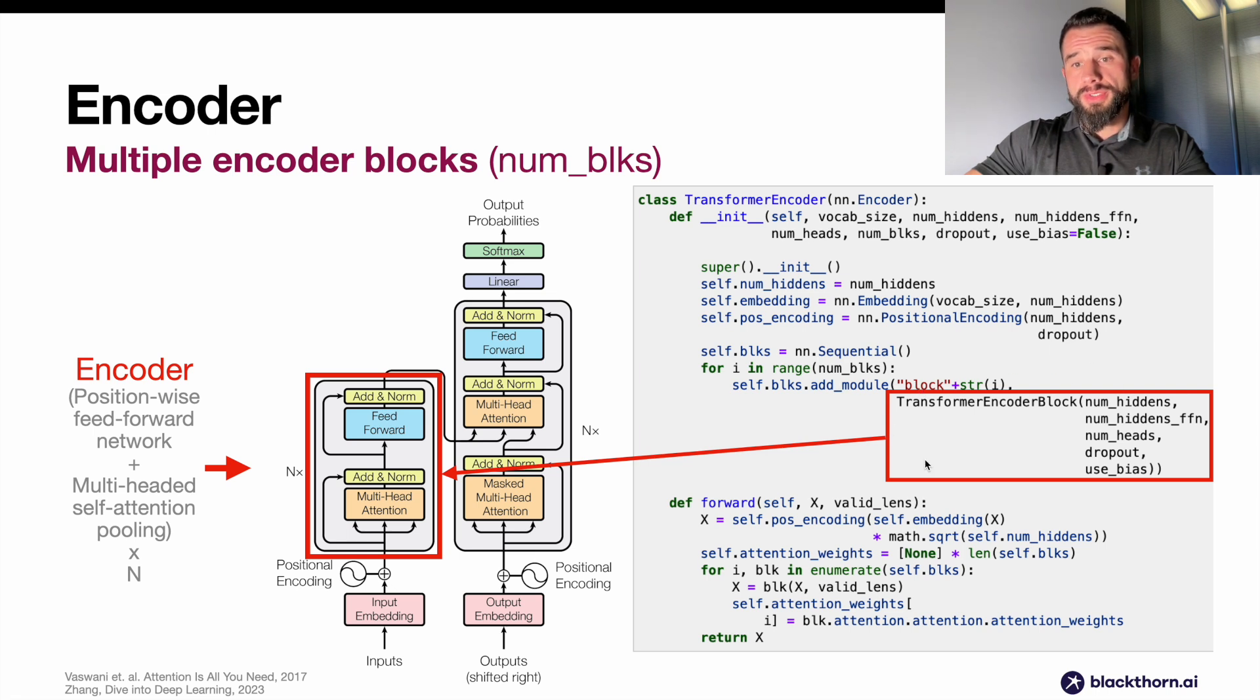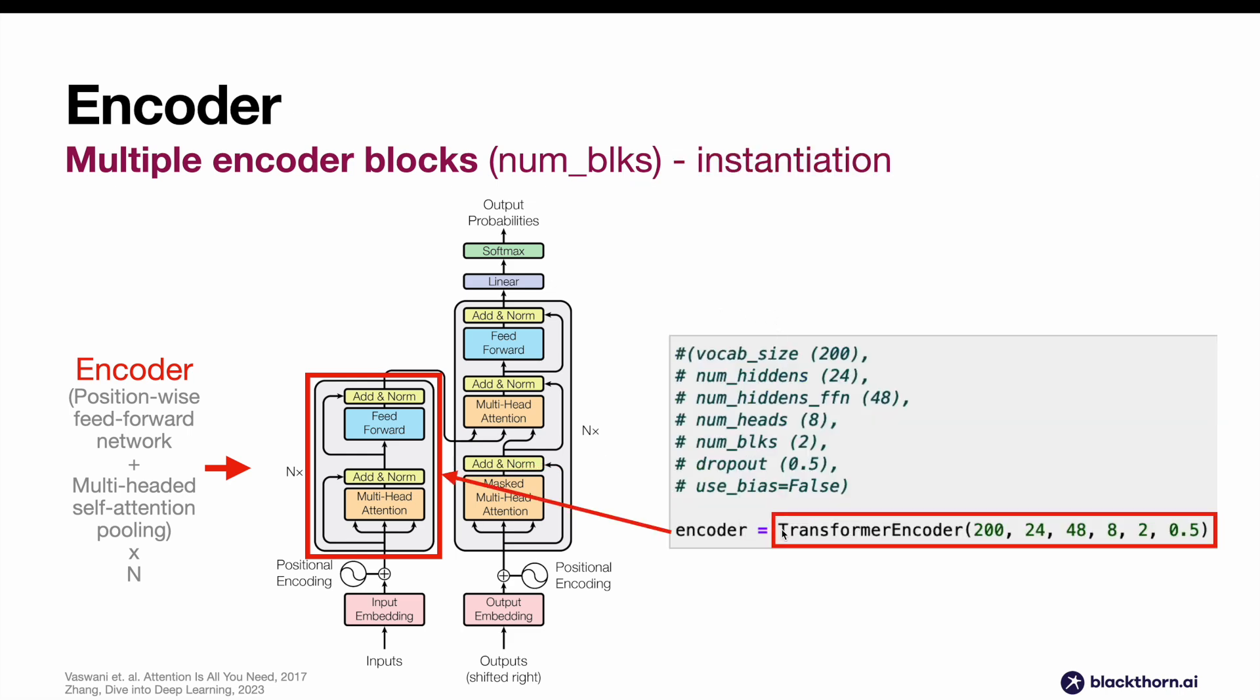The actual encoder consists of multiple transformer encoder blocks that you can see here. So those blocks that you saw on the previous slide are repeated multiple times, controlled by a parameter num_blocks. You can also see here other components such as embeddings and positional encodings. We will see this code later as part of the transformer architecture. 200 is the size of vocabulary, 24 is number of hidden layers in encoder, 48 is number of hidden layers of feed-forward neural network which is part of an encoder, 8 is number of attention heads, 2 is number of blocks, and 0.5 is a dropout rate.